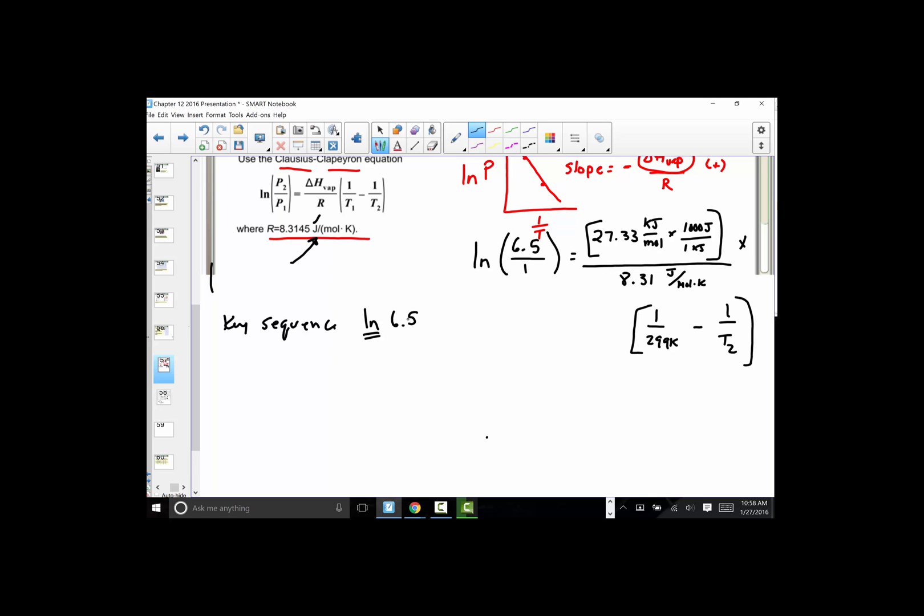You're going to literally hit 6.5. Natural log, and a parenthesis comes up. 6.5, close your parenthesis, equal. And I'm getting a value of 1.871802177. So I've just simplified this portion.